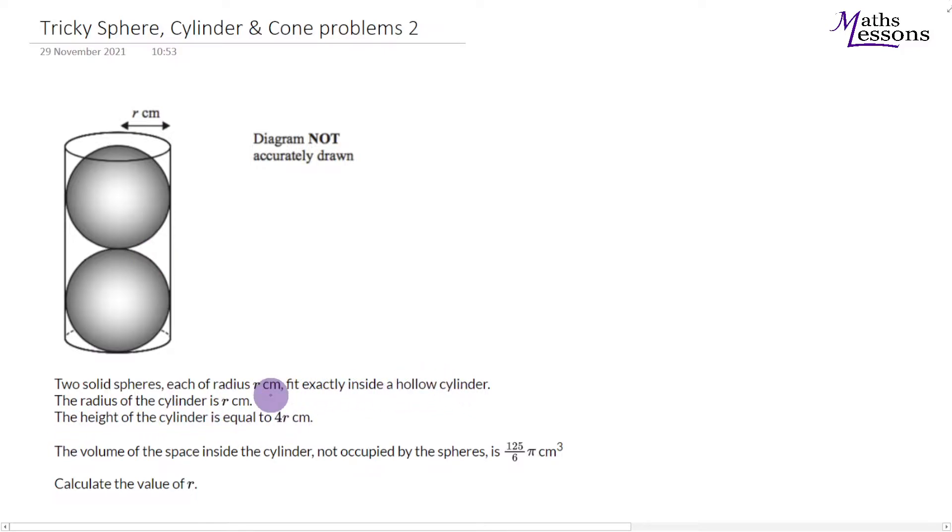The height of the cylinder is equal to 4r, because if that's going to be radius r, then we're going to have another r, then another r, and another r. So that will give us a height of 4r for our cylinder. The volume of the space inside the cylinder not occupied by those spheres is equal to 125 over 6 pi. So remembering our last question, let's take the information we are given and see what we can do with it.